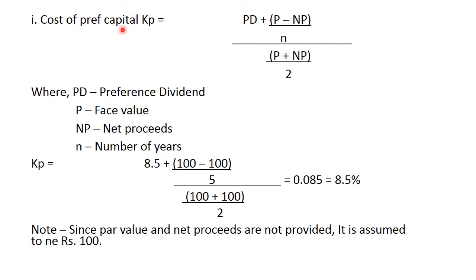First case, cost of preference capital. We know the formula: preference dividend plus par value minus net proceed upon number of years maturity upon par value plus net proceed upon 2. This is the formula, by heart this formula guys.